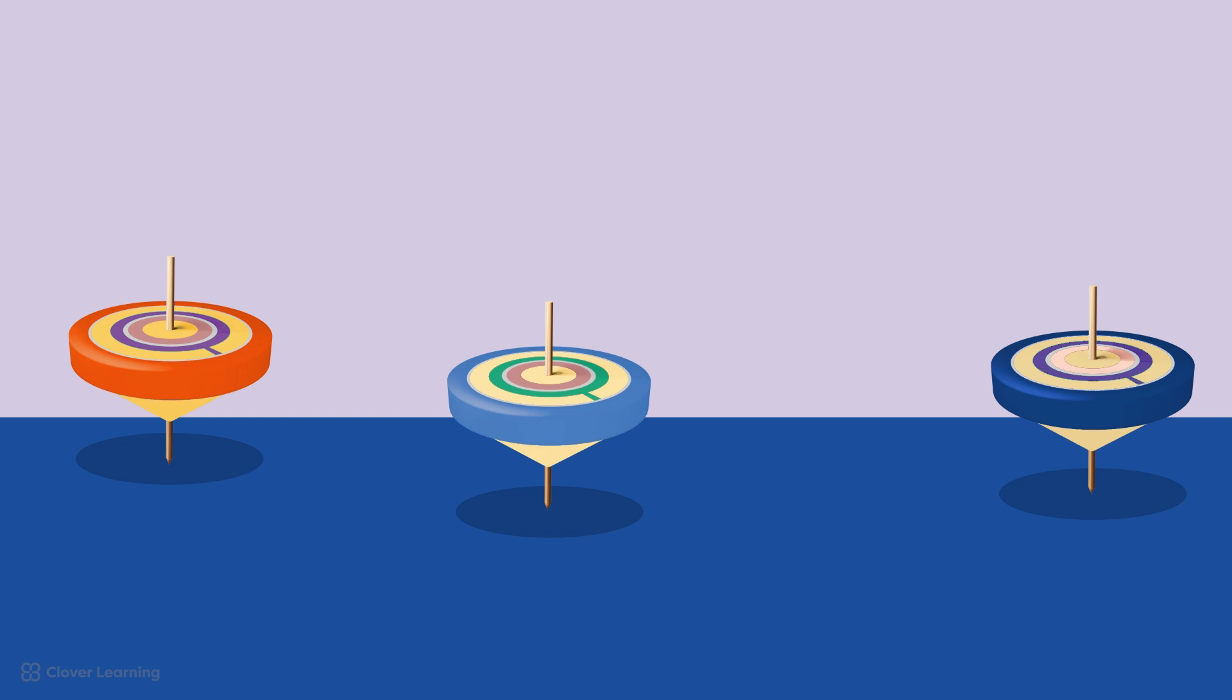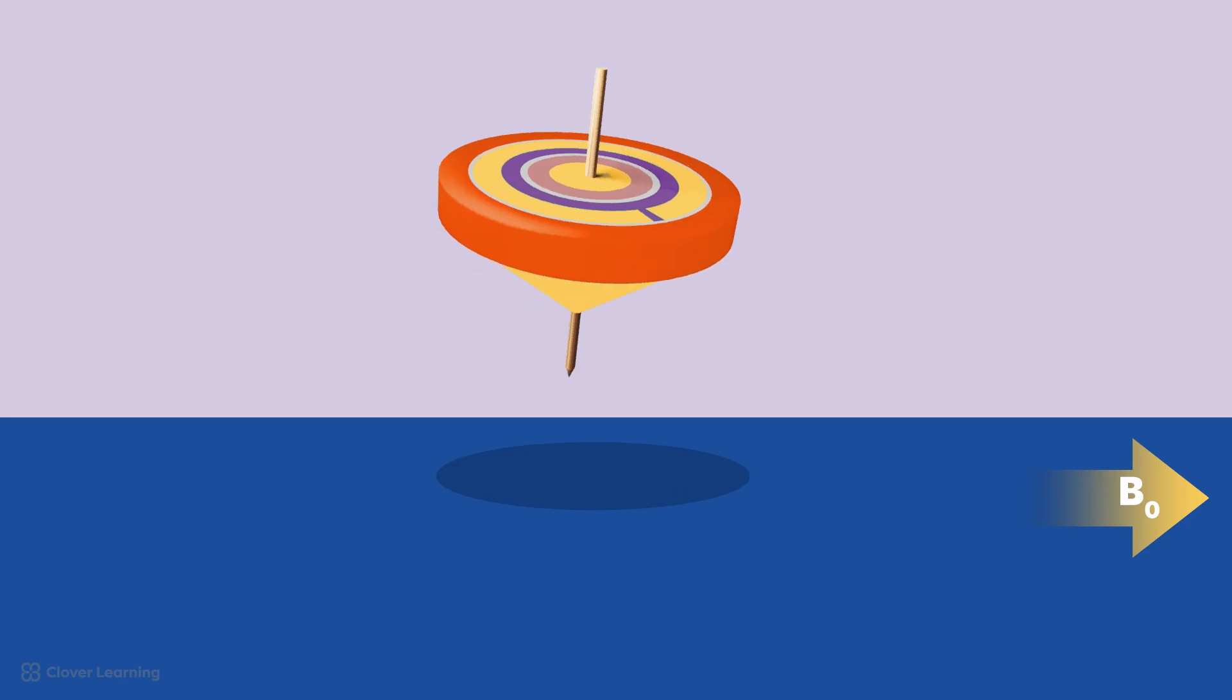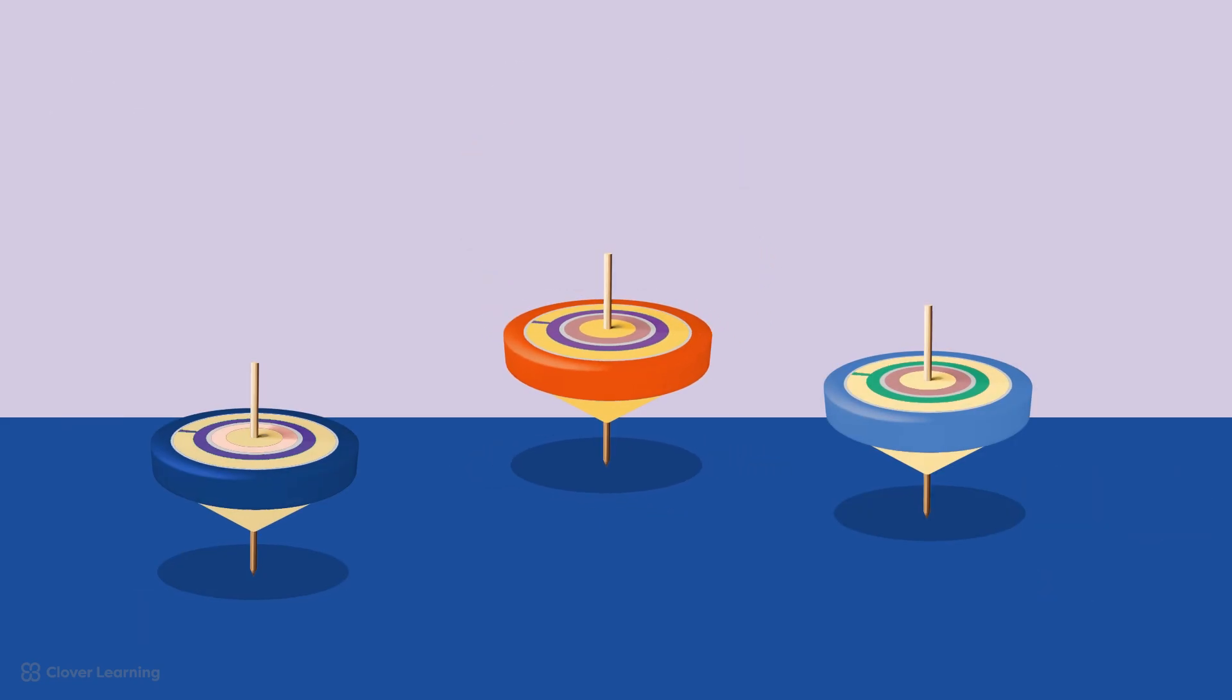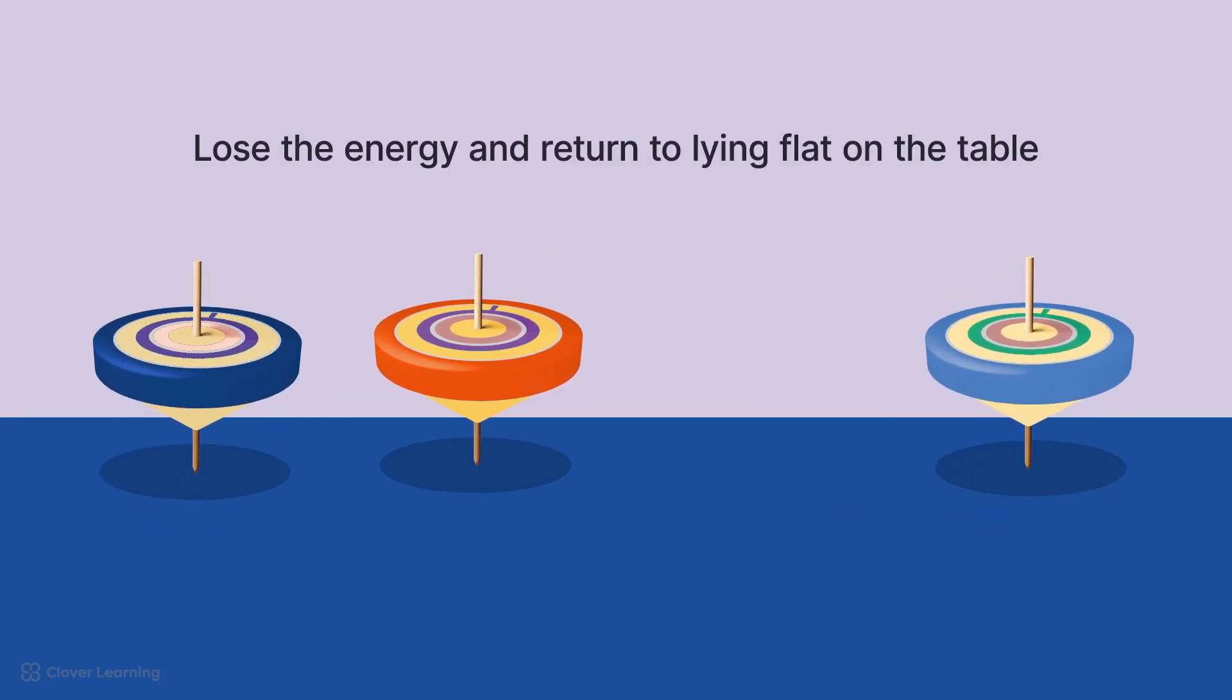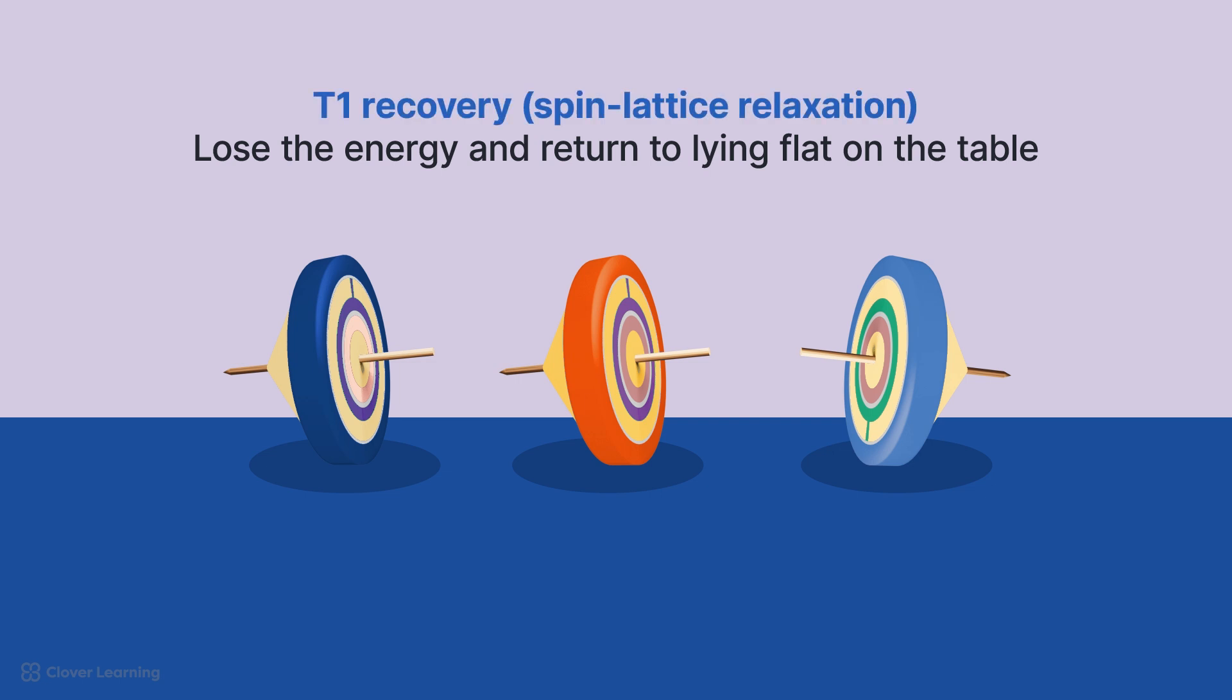So to put it all together, let's continue with the tops example. When the tops are laying on their sides on the table, they represent the hydrogen nuclei in the patient's body aligned longitudinally along B sub-zero, or the static external magnetic field of the MRI scanner. When you pick up the top and spin it, you are applying energy like the RF pulse, which is pulling them away from the longitudinal plane and making them spin in the transverse plane. The process by which the tops lose the energy you applied and return to lying flat on the table is T1 recovery or spin lattice relaxation of the magnetic moments in the hydrogen nuclei.